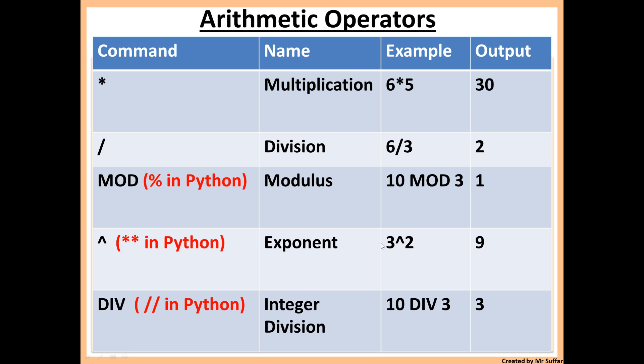3 exponent 2 means 3 to the power of 2, so 3 times 3, which is 9. If it was 10 exponent 2, that would be 100 because 10 times 10 is 100. 10 exponent 3 is 10 to the power of 3, which is 1000, and so on.